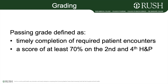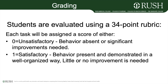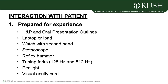How do you pass BCS? A passing grade is defined as timely completion of all required patient encounters. Although you are required to submit four H&Ps for the year, a score of at least 70% on the second and fourth H&P are considered a passing grade. Students are evaluated using a 34-point grading rubric, which can be found in detail in the student guide on Entrada. Each task is scored 0 or 1: a 0 means the behavior was absent or needs significant improvement; a 1 means satisfactory completion with little or no improvement needed.